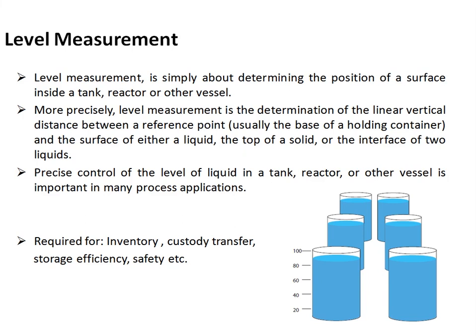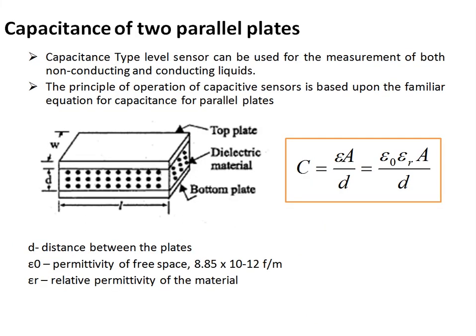Precise control of the liquid level in a tank, reactor, or any other vessel is important in many process control applications. Level measurement is required for maintaining inventory — in industries where large amounts of raw materials must be stored to achieve production targets. It is also required for custody transfer when material is purchased or sold, for storage efficiency, and for safety to prevent spills.